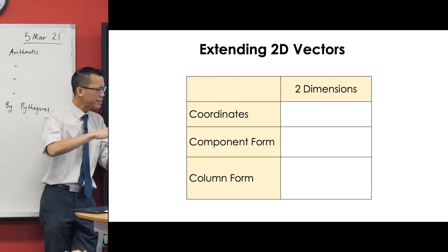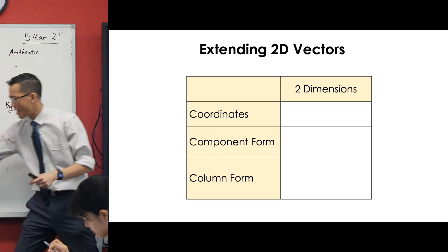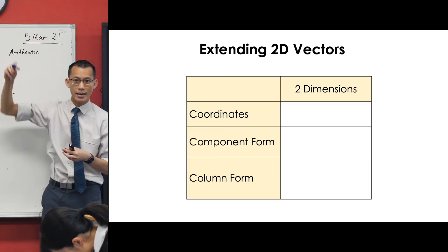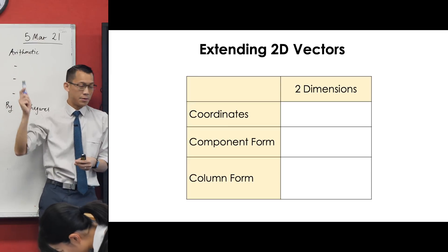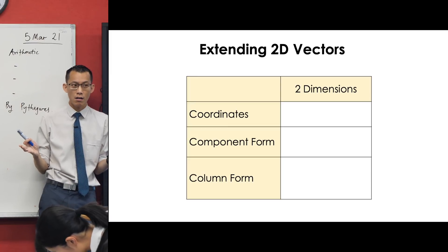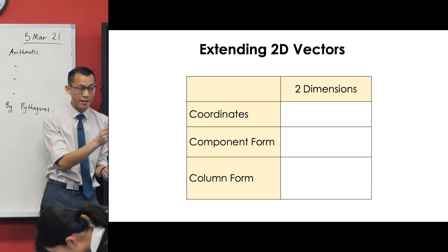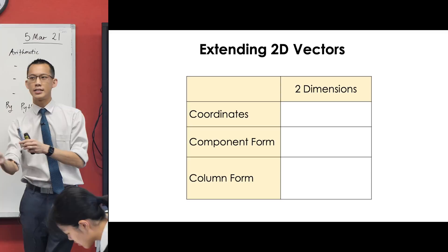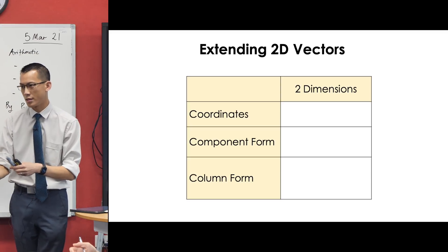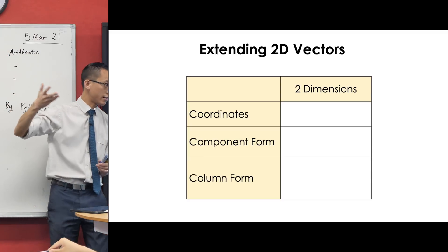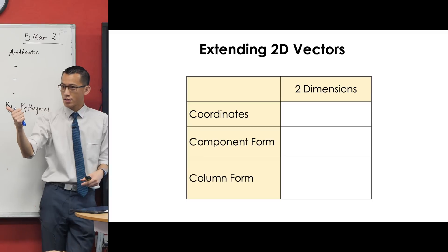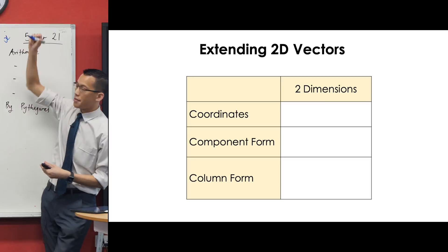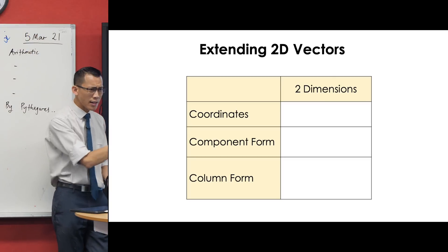Component form - if you wanted the component form of the position vector that gets you to (x,y), what would you write? x i, and i is our - what do we call it? It's got a special name. It's the unit vector, and in particular, we also sometimes call it the basis vector, because it's a unit vector in a particular orthogonal direction that we're interested in. x i plus y j, the other one in the y direction.